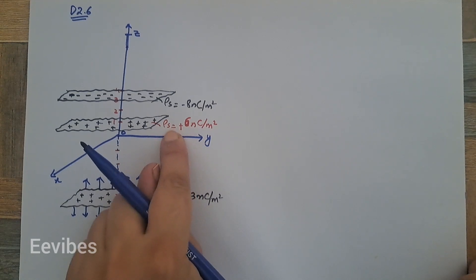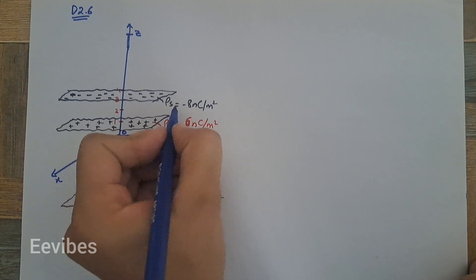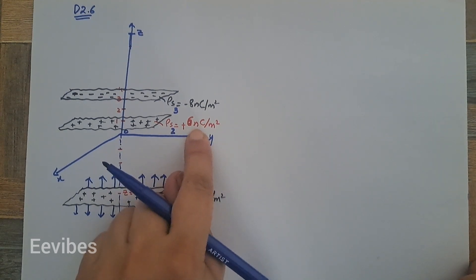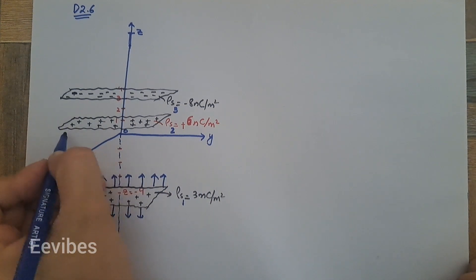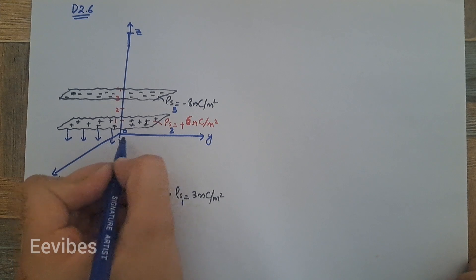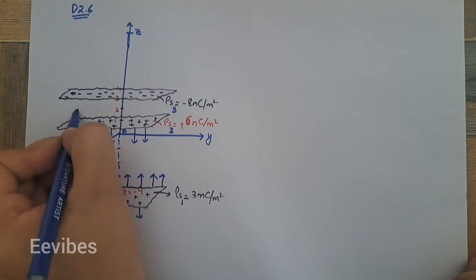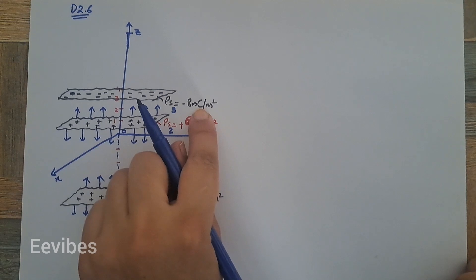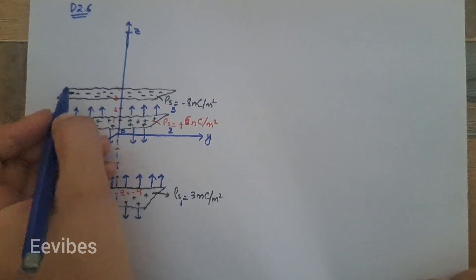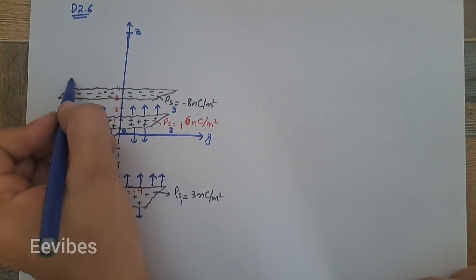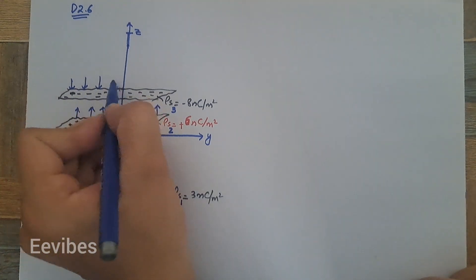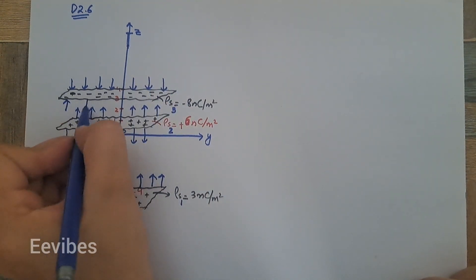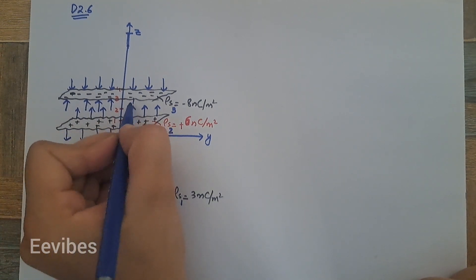Similarly, let's call the sheets PS1, PS2, and PS3. This second sheet of charge PS2 is also positive since its surface charge density is 6 nano coulombs per meter square, and again its electric field lines will point away from it. The third sheet PS3 has a negative surface charge density of minus 8 nano coulombs per meter square. Since it's negatively charged, its electric field lines point inward, meaning a positive test charge will be attracted towards it.